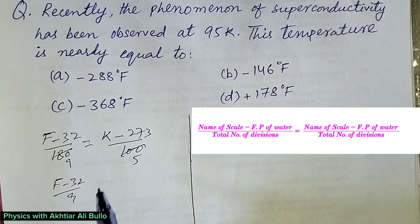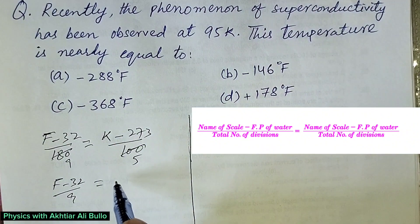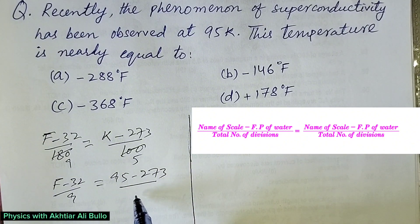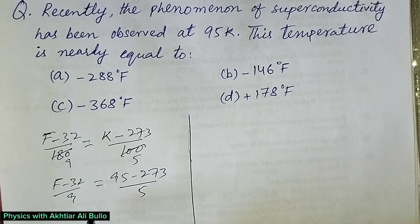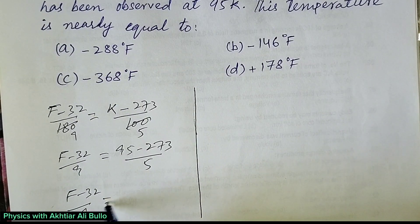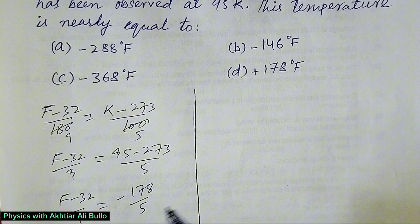(F - 32)/9 equals the temperature in Kelvin obtained, which is (95 - 273)/5. So (F - 32)/9 = -178/5.